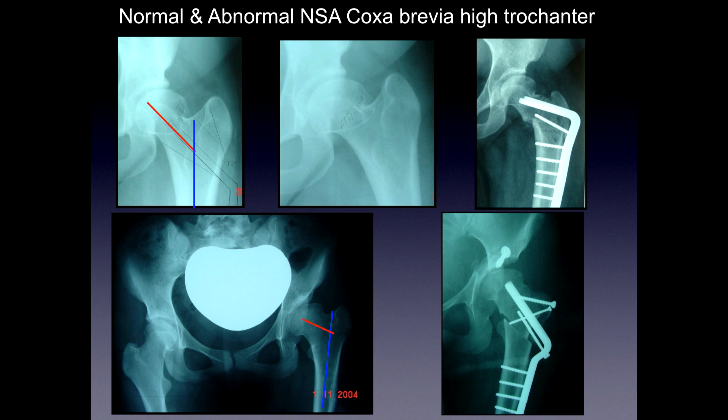An example: a high riding trochanter with a normal neck-shaft angle but slightly short neck — do a relative neck-lengthening and trochanteric transfer. Another case with both a high trochanter, short neck, and abnormal neck-shaft angle: perform the Morse osteotomy with the cut at 130 degrees, transfer laterally, transfer the trochanter. This patient also had an acetabular problem, so a dome Chiari osteotomy was added on top.